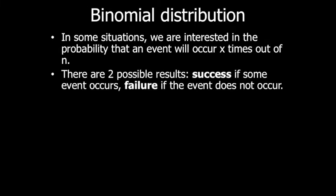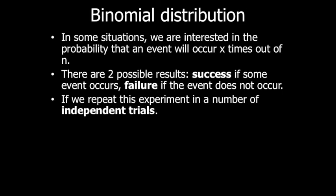How do we know that it is a binomial distribution? The first condition is it must be discrete, and this discrete random variable must contain two possible results: success, if some event occurs, and failure, if the event does not occur. For example, if you are tossing a coin, it's either a head or a tail. If you want success to be the head, then tail is the failure.